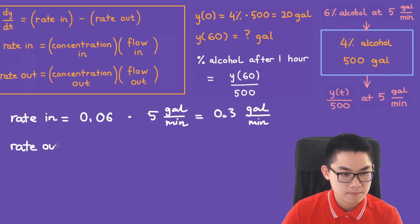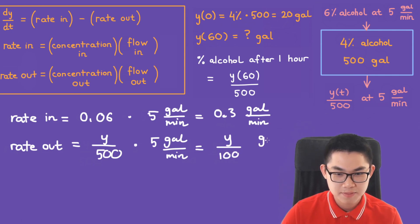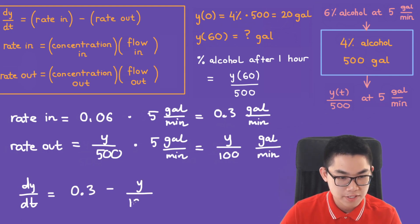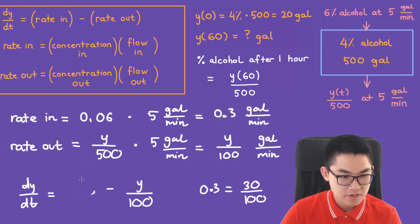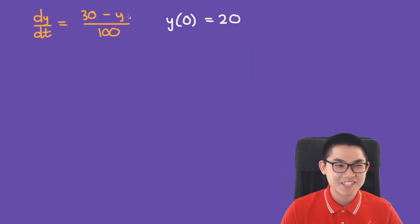The rate out is the concentration out, y/500, times 5 gallons per minute, giving y/100 gallons per minute. This means dy/dt is equal to 0.3 minus y/100. Rewriting 0.3 as 30/100, we can combine into a single fraction: dy/dt = (30 − y)/100. We also have the initial condition y(0) = 20.